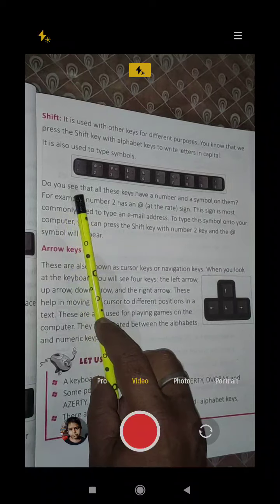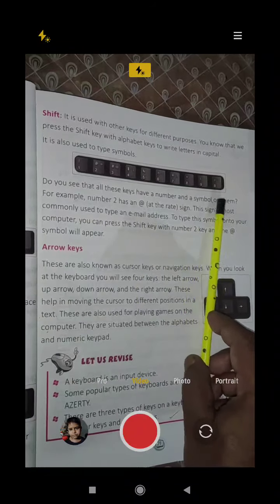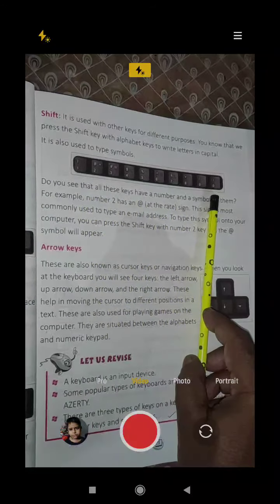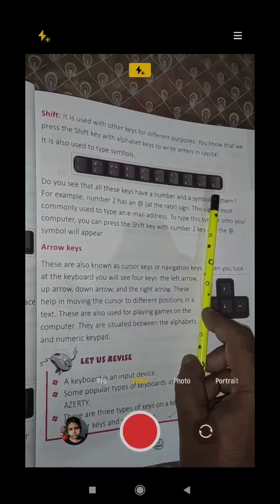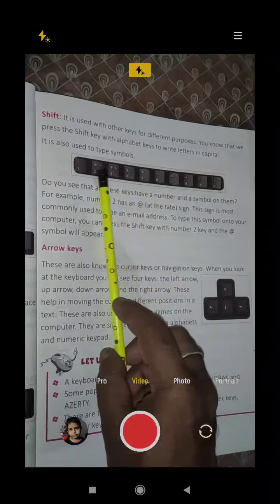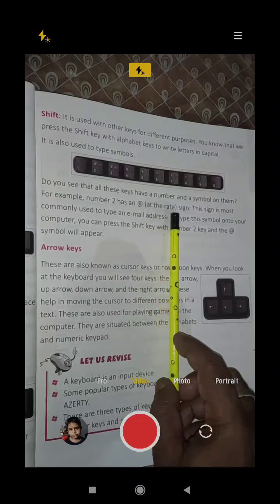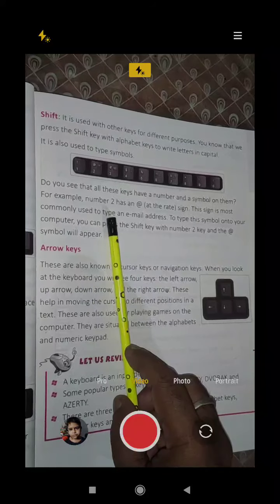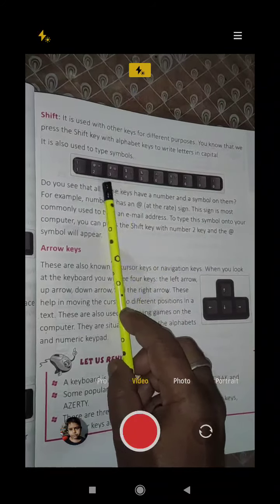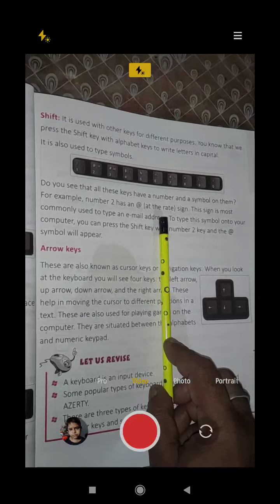Do you see that all these keys have a number and a symbol on them? These are the keys 1, 2, 3, 4. To write the number, we press the key. To write the symbol on top, we use shift. For example, number two has an at-the-rate sign. This sign is most commonly used to type an email address.